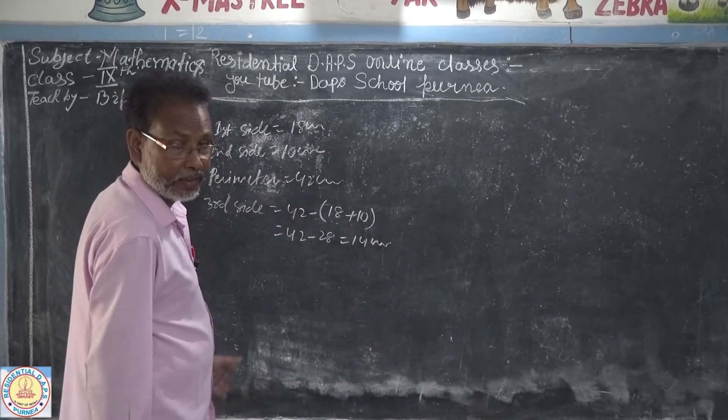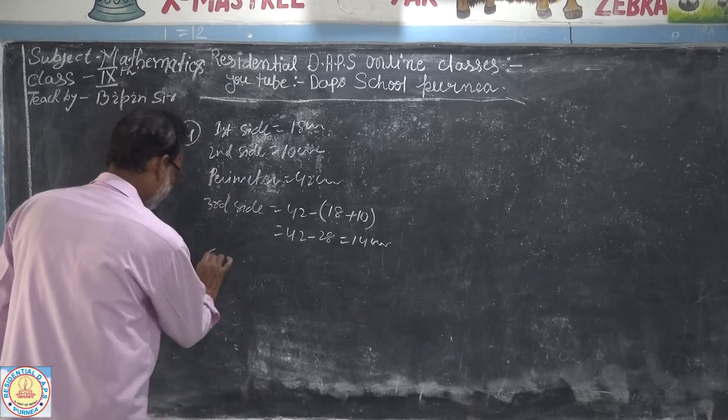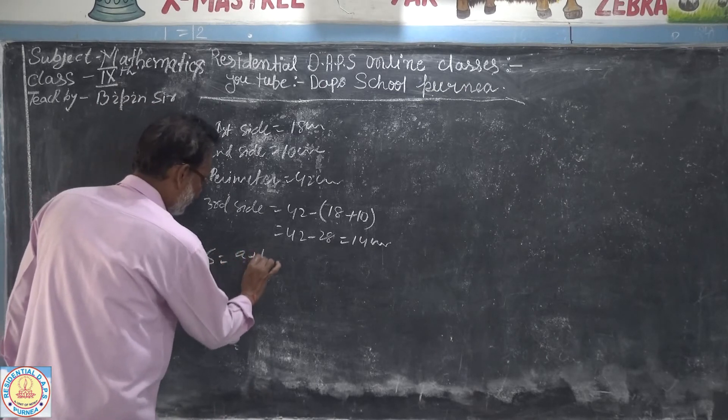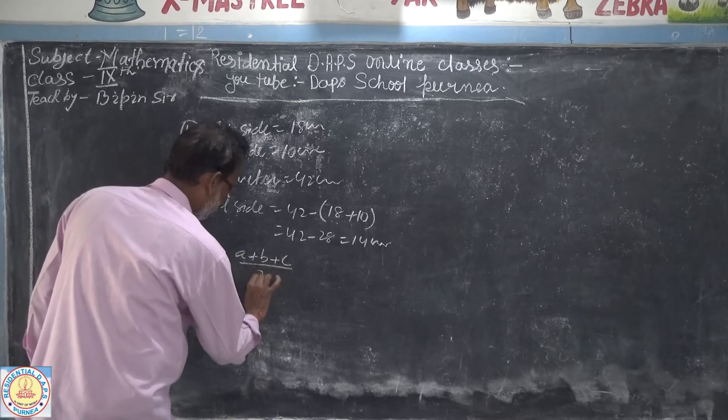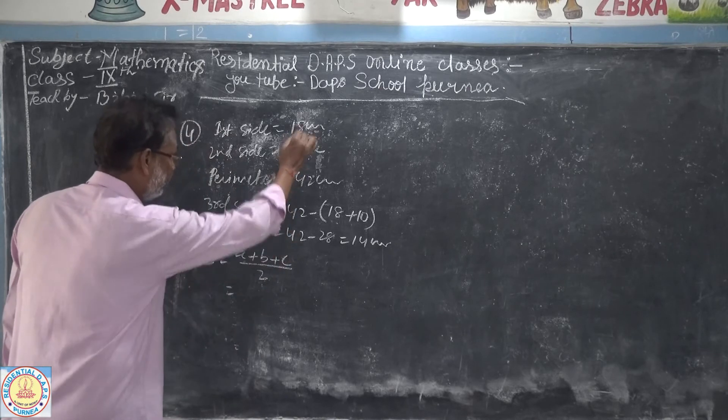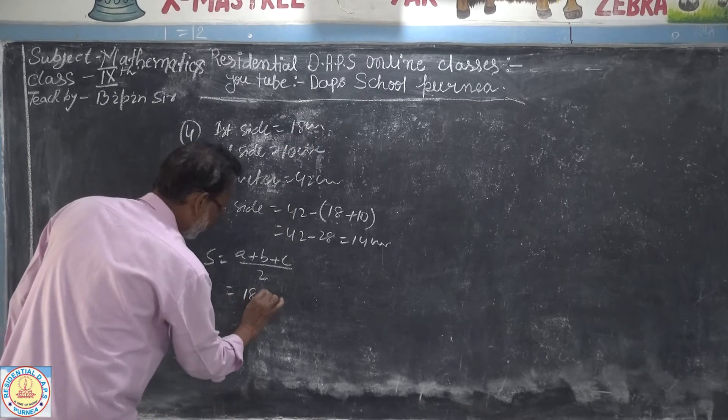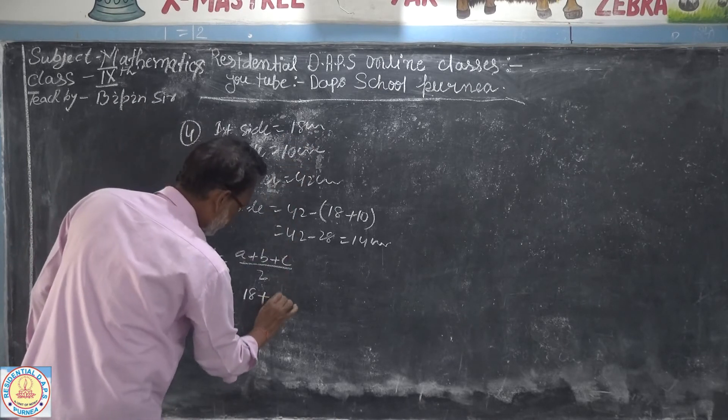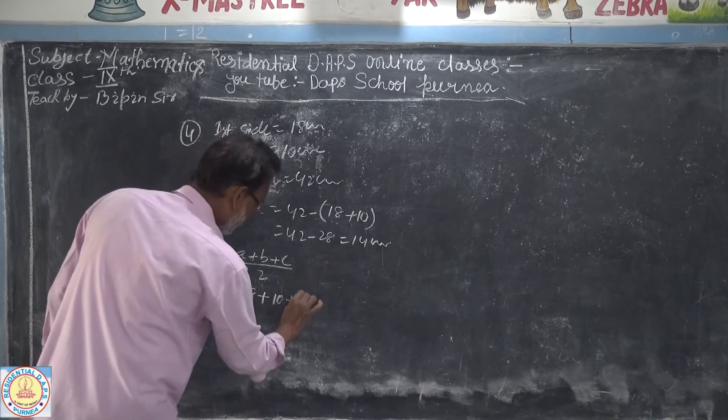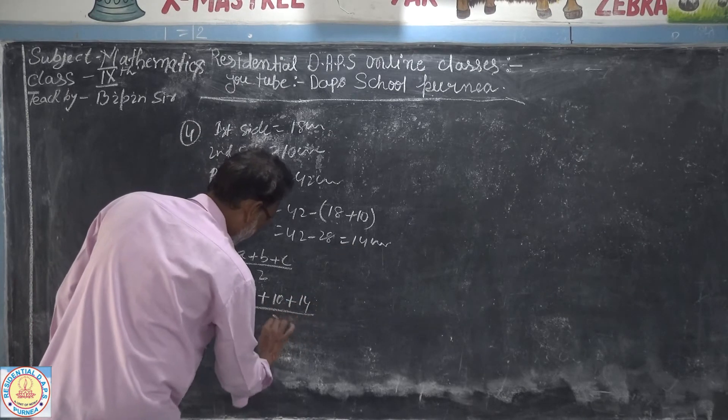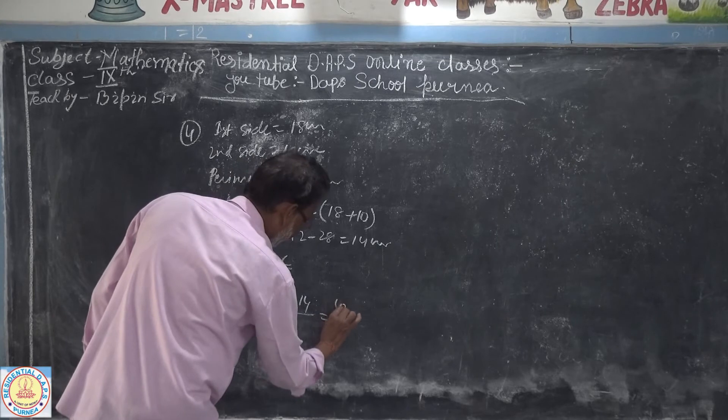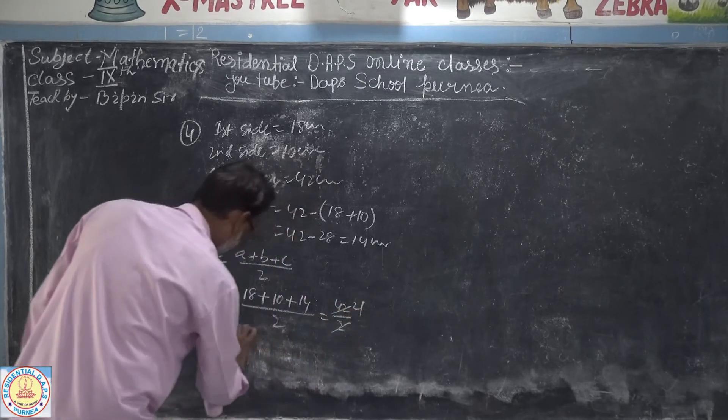Now find the semi-perimeter. S is equal to a plus b plus c divided by 2. The value of a, first side, is 18 cm, b second side 10 cm, and third side 14 cm. This equals 42 divided by 2, which is 21 cm.